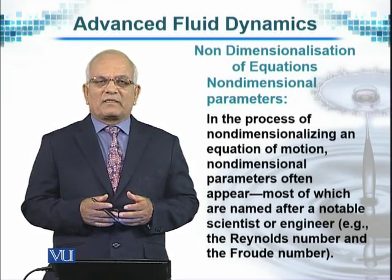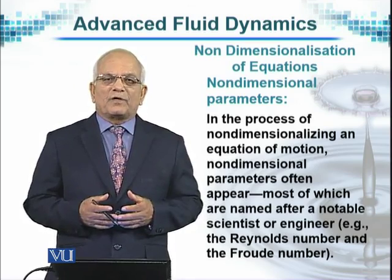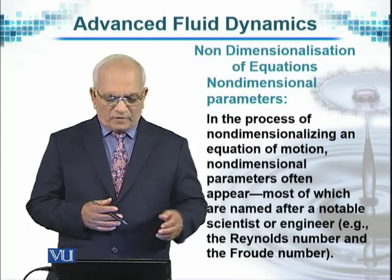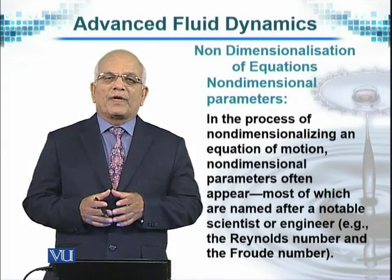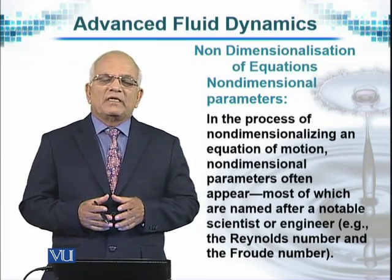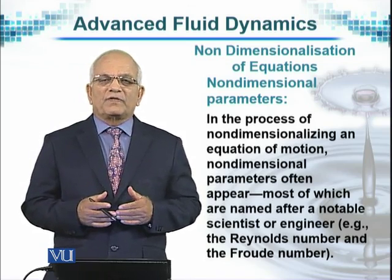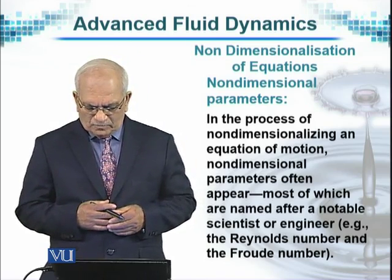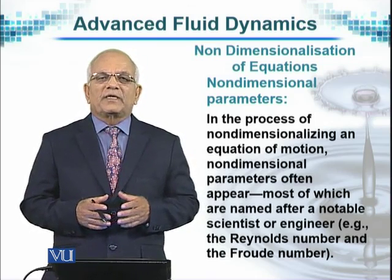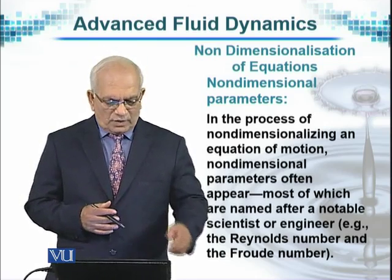There are many such examples. One of the most common is Reynolds, and also the Froude number. These two became very famous because they are very commonly used. The Reynolds number is a ratio of inertial forces to viscous forces, whereas the Froude number is a ratio of inertial forces to gravitational forces.